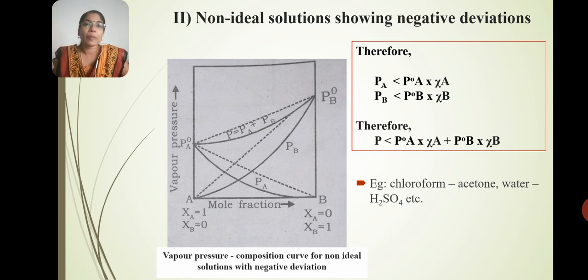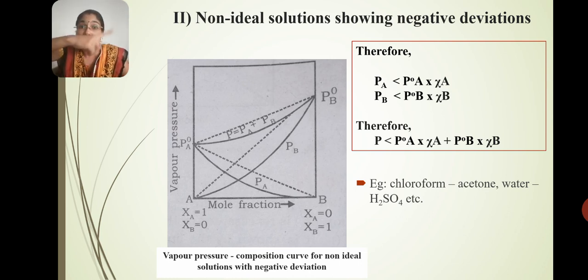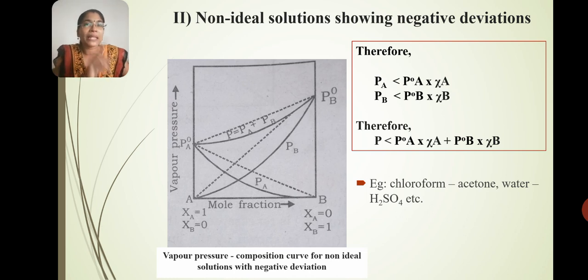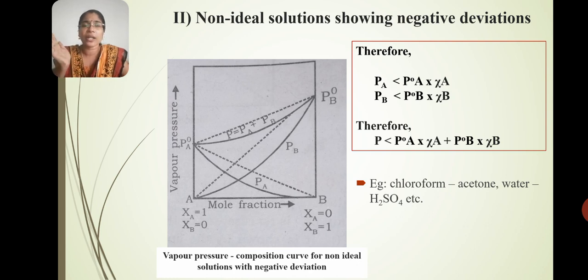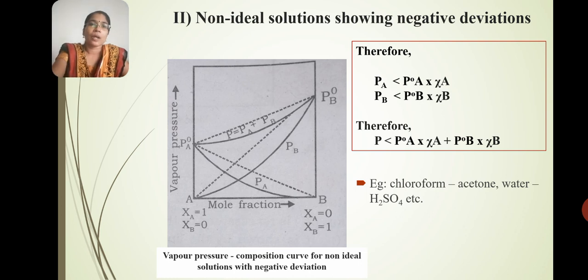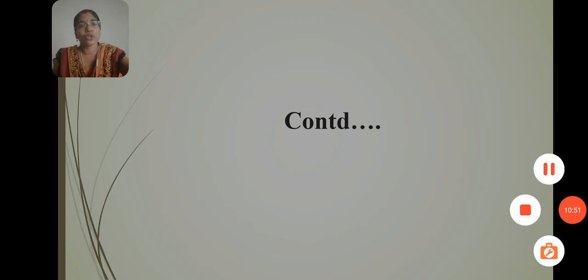Draw and explain the vapor pressure composition curve of a non-ideal solution showing negative deviation. Graphically, positive deviation is in the upward direction and negative deviation is in the downward direction — opposite directions on the graph. In this case, we will learn the rest of the portions in the class.